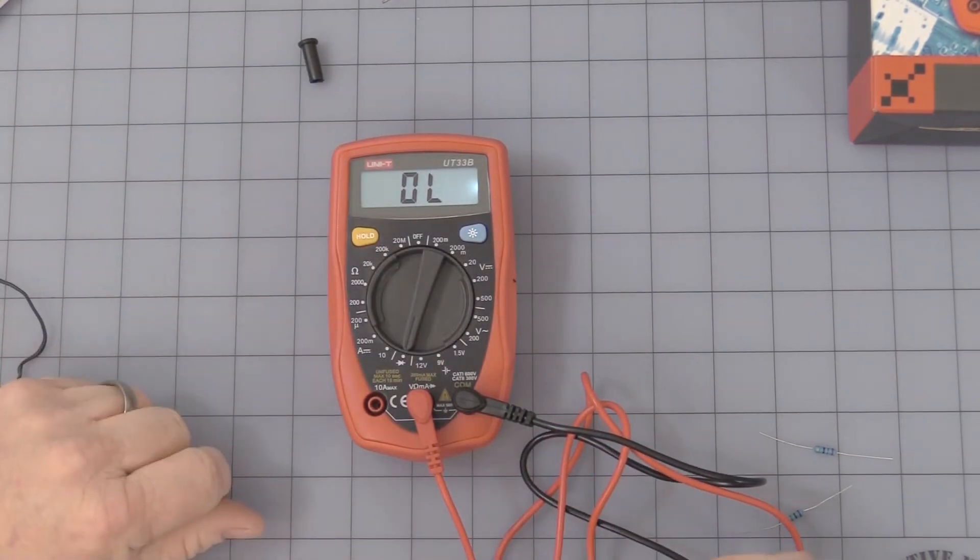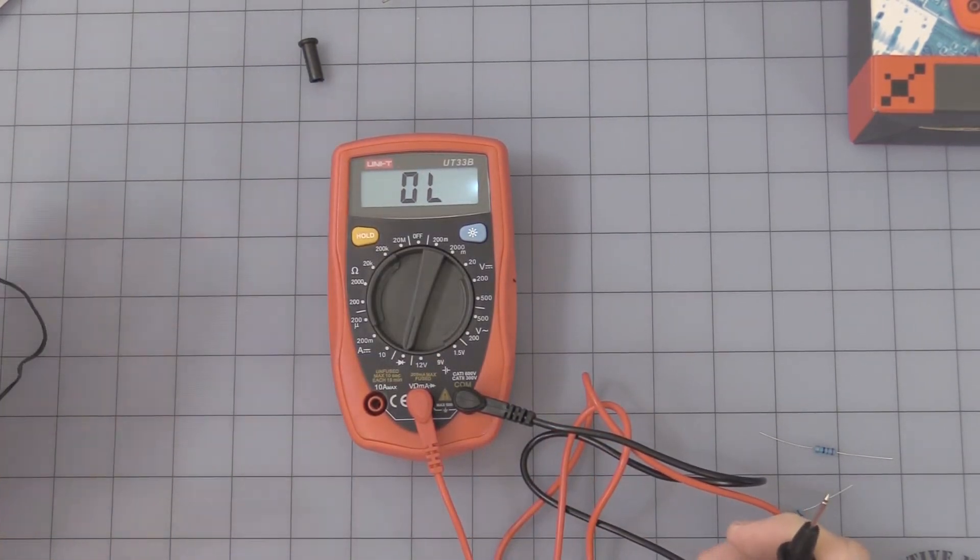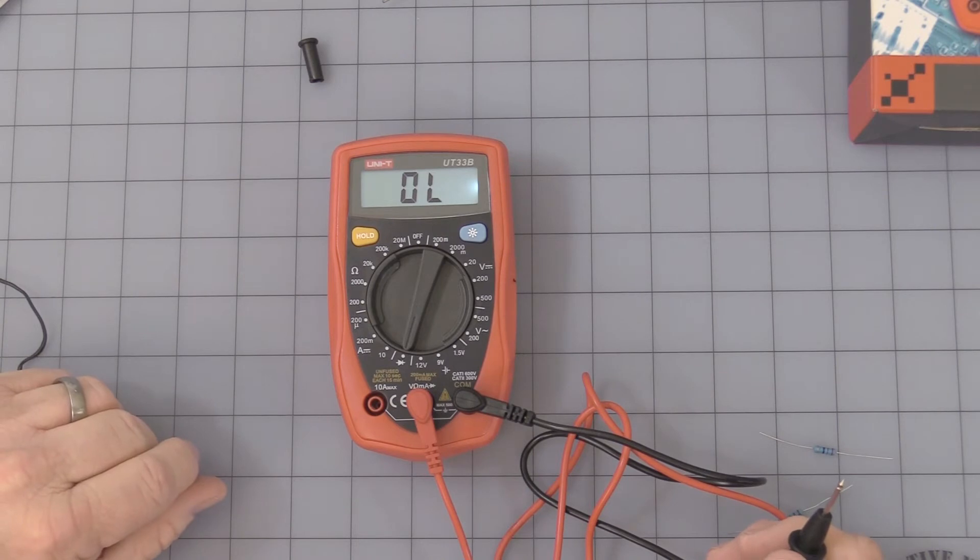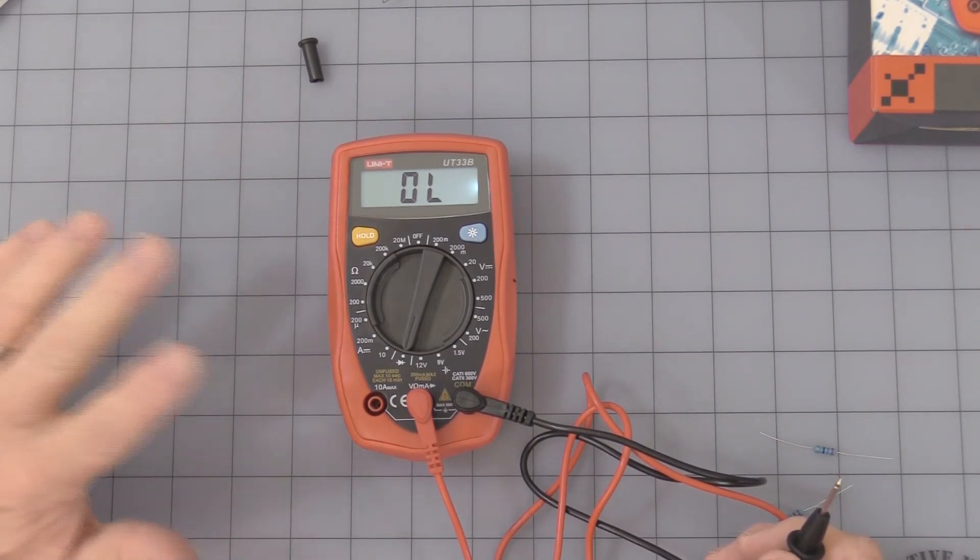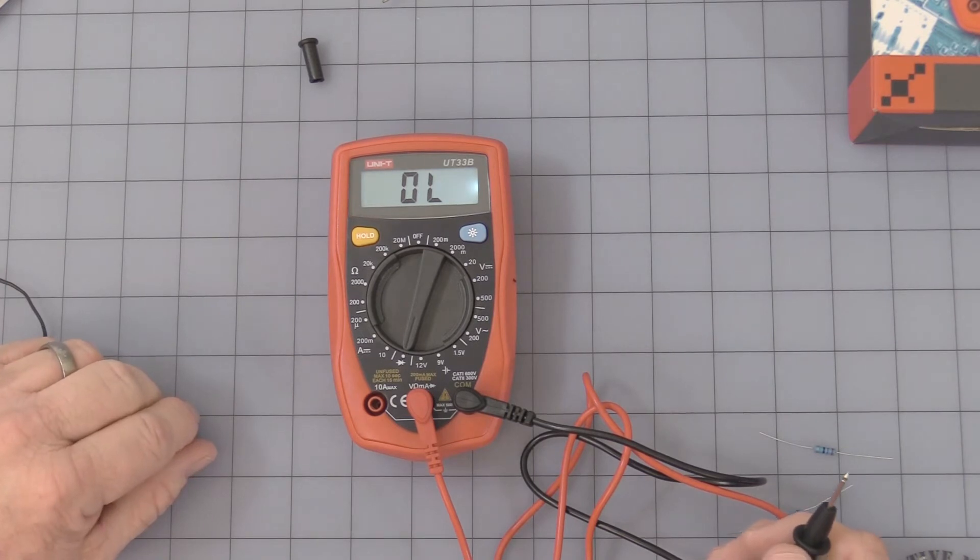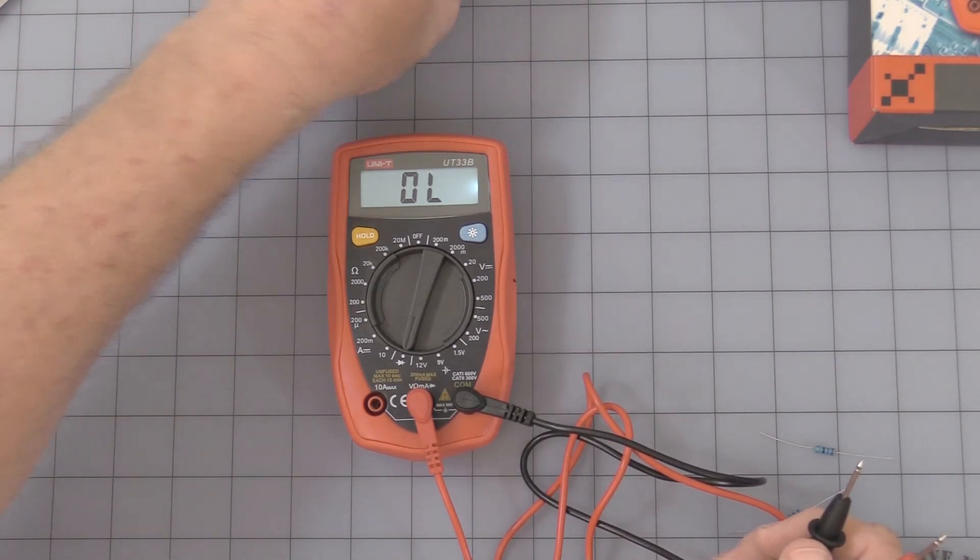Then you get into a diode tester. This is one thing I don't like about this meter - you could have very easily just added an audible continuity tester also. But for some reason they didn't. That is, unfortunately, the way it is.